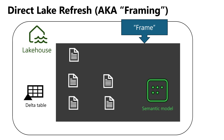Data stays in the Delta table in OneLake, and no data is loaded into the Direct Lake semantic model. We are only telling the semantic model: there is a new file down in OneLake — go and take it when you need data for a report. Since the Direct Lake refresh is just a metadata refresh, it's usually a low-intensity operation that shouldn't consume much time or resources. Even if you have a billion-row table, you are not refreshing a billion rows — you refresh only the information about that table.